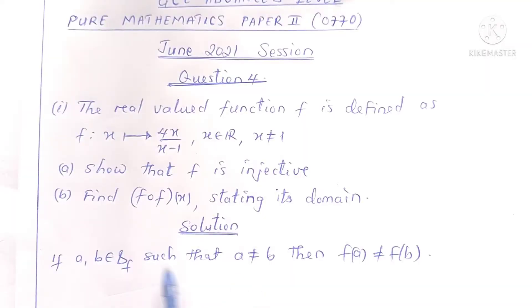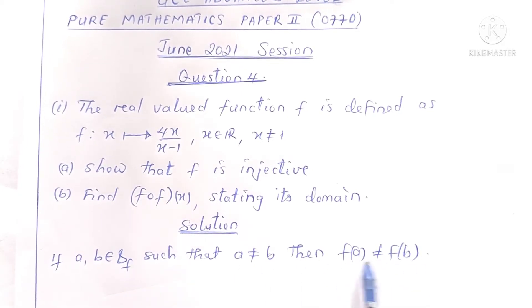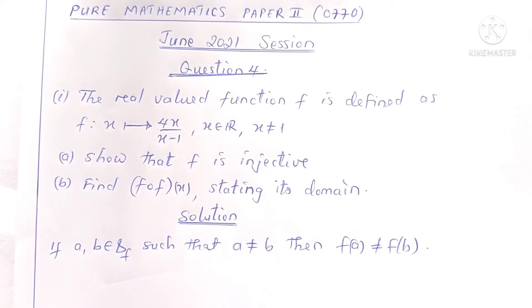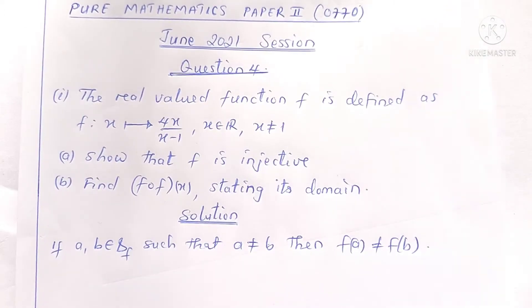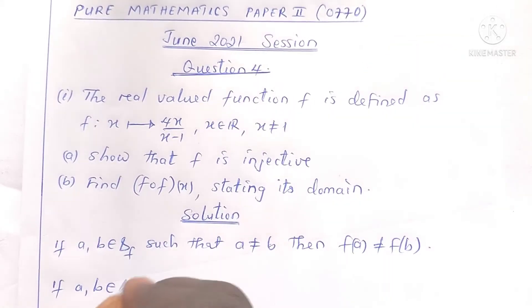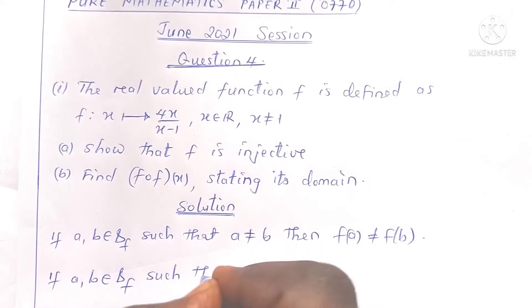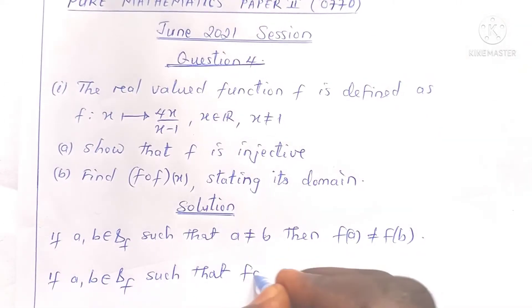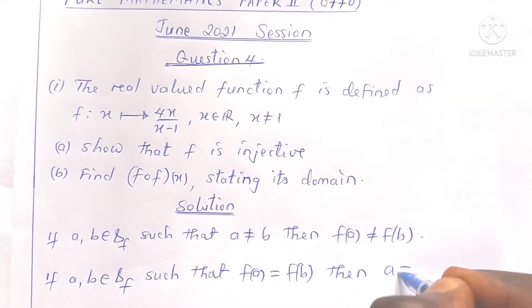So we are saying that if we pick two distinct elements from the domain of definition of f, then their images must also be different. To prove that a function is injective, we use the contrapositive of this statement, which states that if a and b are two elements from the domain of definition of f such that f of a is equal to f of b, then a must be equal to b.